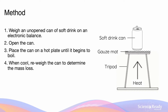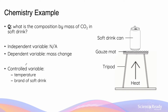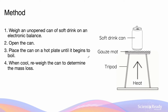I want to use this experiment to highlight when an experimental method is invalid. The aim is to determine the mass composition of CO₂ in the soft drink. Although heat effectively removes the CO₂, it also removes the water content inevitably present in the soft drink — which actually makes up a significant portion of it. So the mass change reflects not only the loss of CO₂ but also the loss of water, meaning this dependent variable is not truly addressing the aim of the experiment.